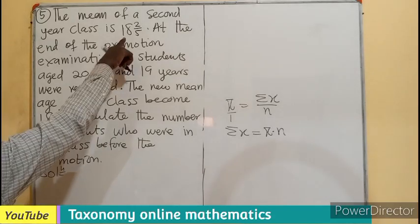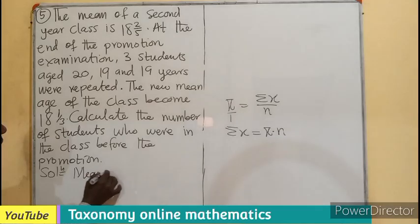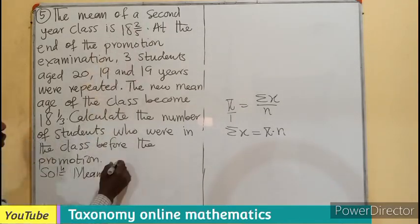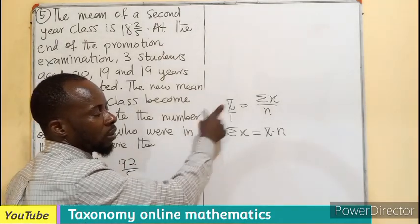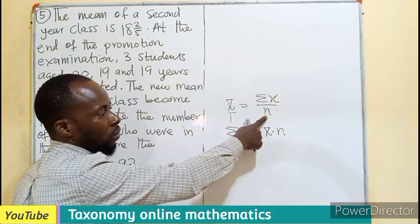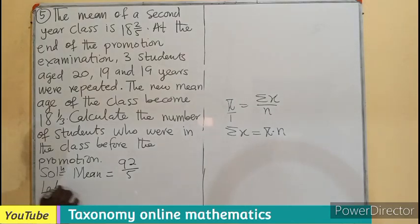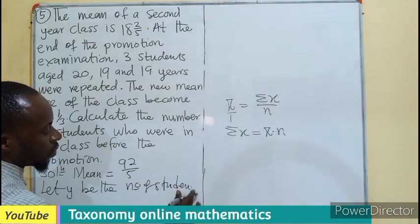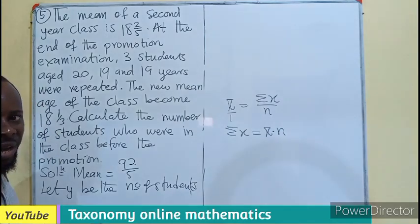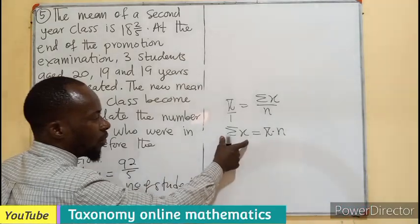First of all, indicating the mean, which is our first part. The mean is going to be 5 times 18 plus 2, that would be 92 divided by 5. The number of students is not known, but we can easily find the sum by the product of the two. Let Y be the number of students in the class before the promotion.